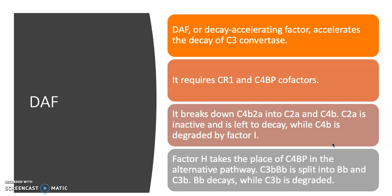Factor H takes the place of C4BP in the alternative pathway. So C3Bb — the C3 convertase of the alternative pathway — is split into its two components, Bb and C3B. Bb decays much like C2A, while C3B is degraded.